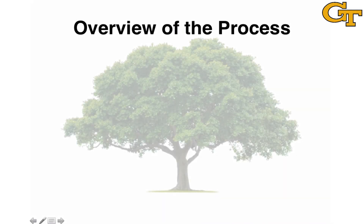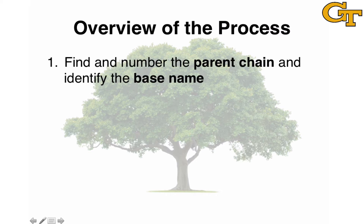Let's briefly remind ourselves of the overview of the process we've seen over the past several videos for naming organic compounds according to the IUPAC system. The first step is to find and number the parent chain and identify the base name using the length of the parent chain.